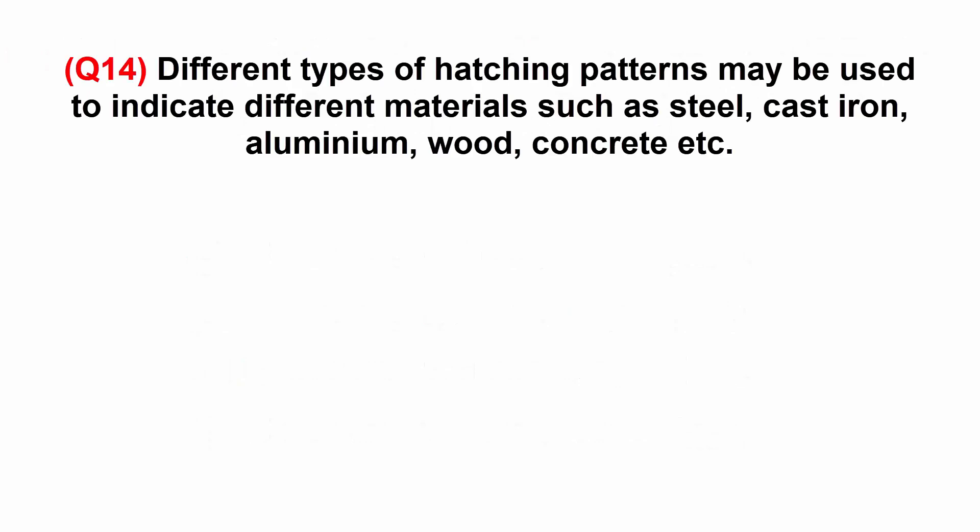Different types of hatching patterns may be used to indicate different materials such as steel, cast iron, aluminium, wood, concrete, etc. A: true. B: false.